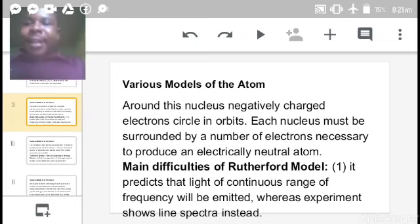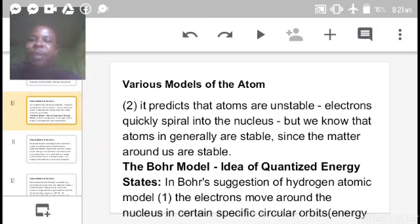He further said that around this nucleus, negatively charged electrons circle in orbit. This discovery by Rutherford was a major breakthrough, though it had its difficulties. The first difficulty was that it predicts that light of continuous range of frequency would be emitted, whereas experiment shows line spectra. The second was that it predicted that atoms are unstable, electrons quickly spiral into the nucleus, but we know atoms in general are stable.